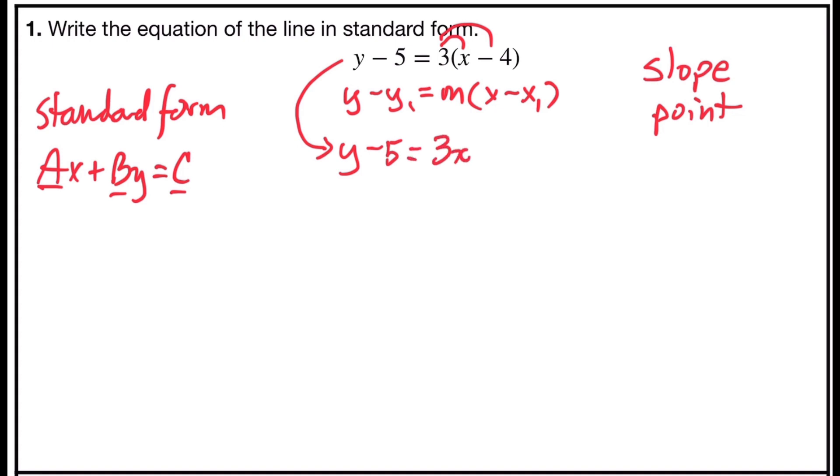3 times x is 3x, and 3 times negative 4 is negative 12. So now I have the y on the left side, just like it is in standard form. However, the x term is on the right side.